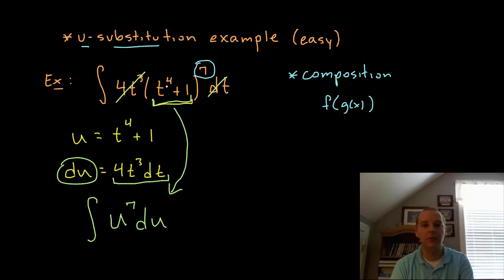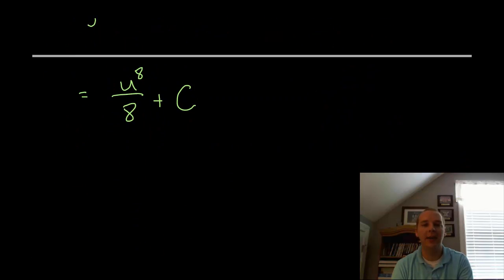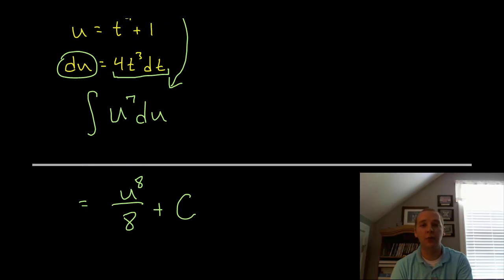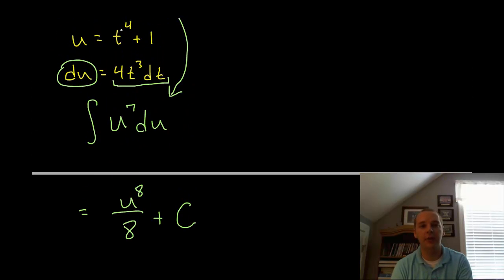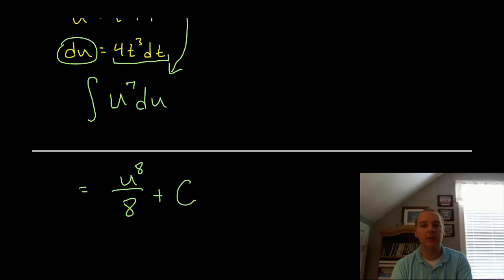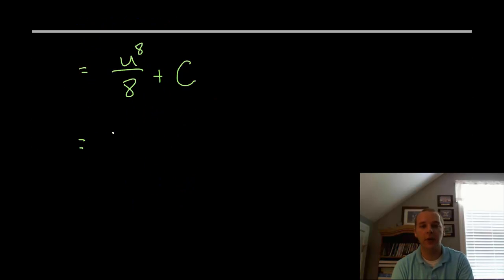The problem is that this original integral was written or expressed in terms of t. I don't want to leave my answer in terms of u because the only reason that is u is by a choice that I made to let u be t to the 4th plus 1. So it is an easy fix. For our final legitimate answer, we would take the expression u out and replace it with whatever it was back here in terms of t.